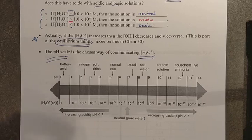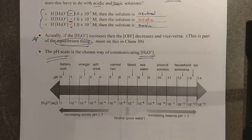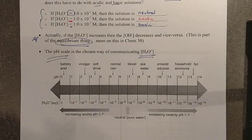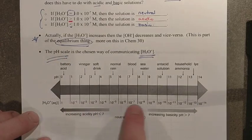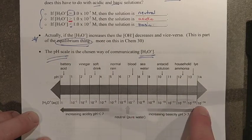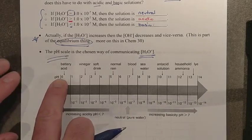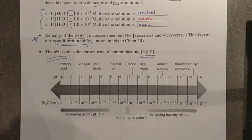Lots of hydronium equals acidic, very little hydronium equals basic, and equal parts of hydronium and hydroxide equals neutral. The pH scale is a way of simplifying the very small scientific notation requirements for hydronium ion concentration. pH is the logarithmic number for these exponential scales.